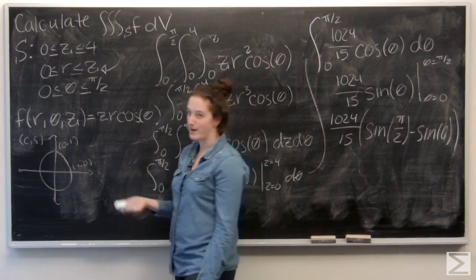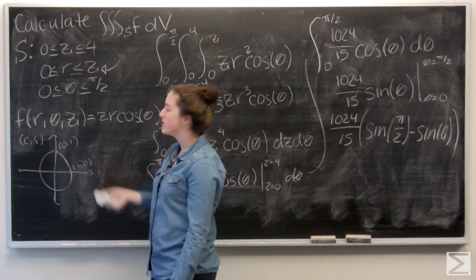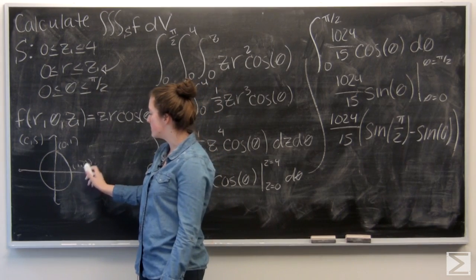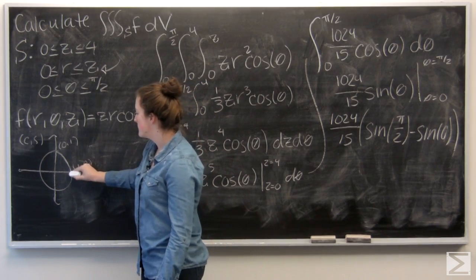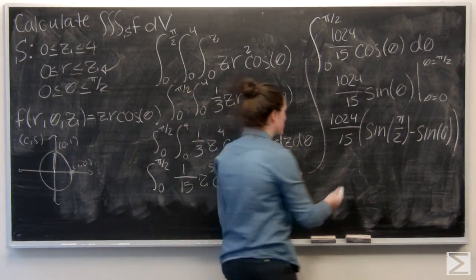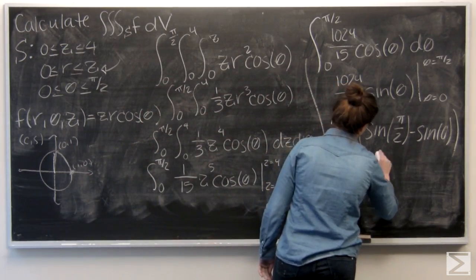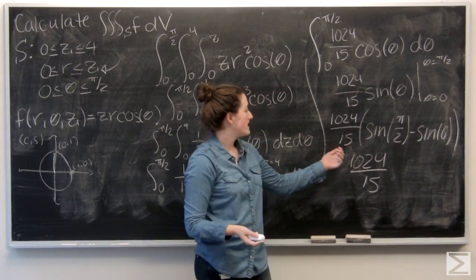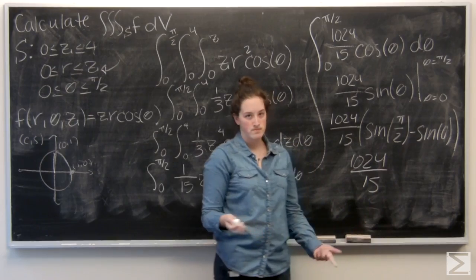Luckily for me, I have my unit circle drawn. So remember, sine is the y coordinate. So for sine of 0, I'm going to get 0. And for sine of pi over 2, I'm going to get 1. So that makes this really easy. 1024 over 15 times 1 minus 0 is like times 1.